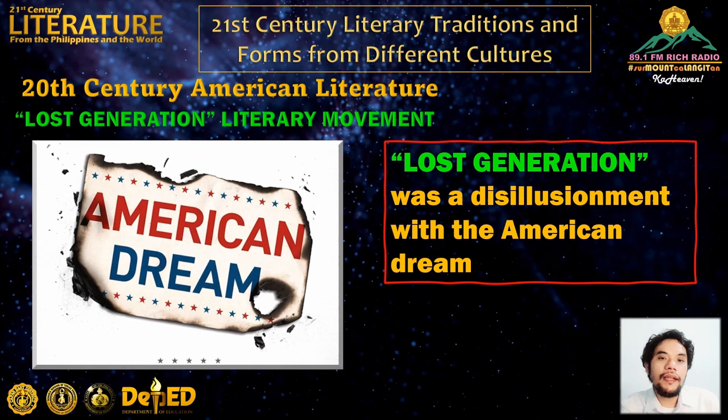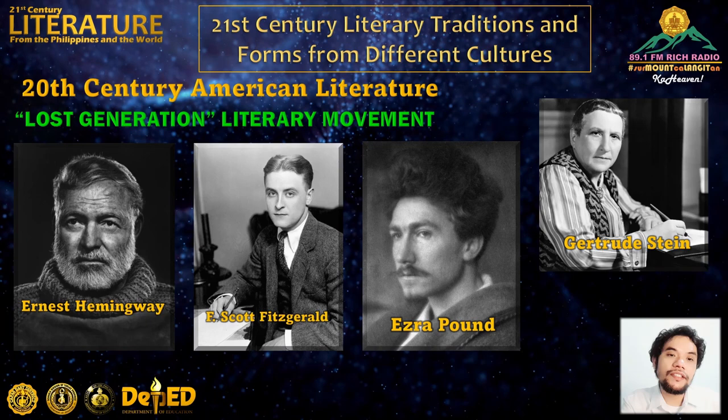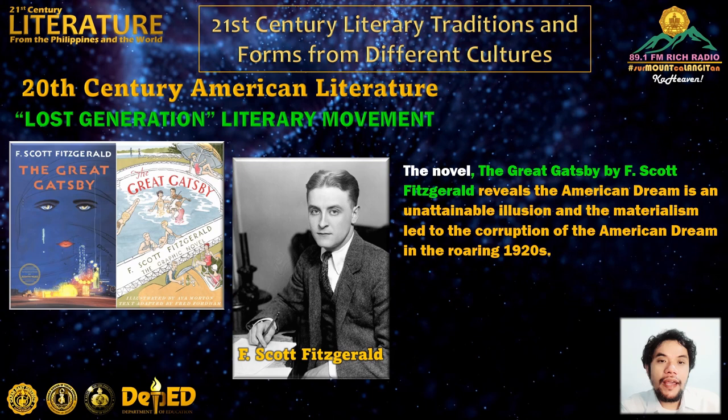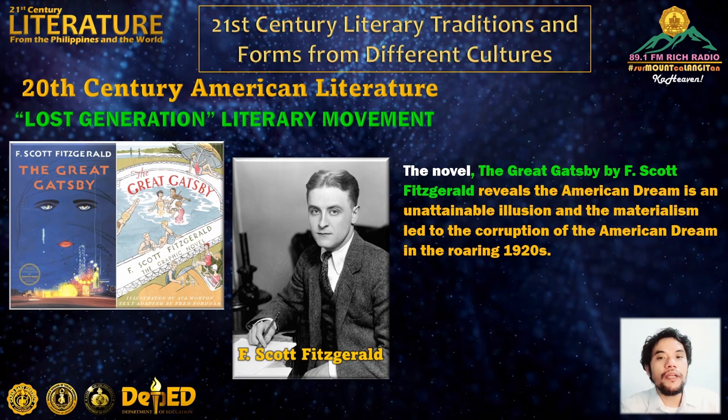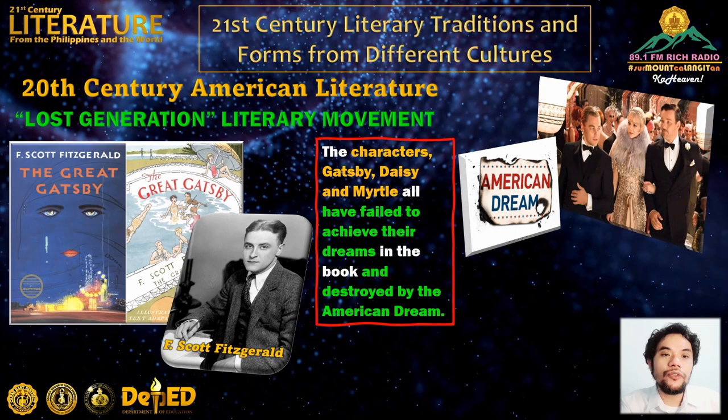Another American literary movement of the 20th century occurring around World War II was the Lost Generation. Disillusionment with the American dream characterized the work of Ernest Hemingway and other writers such as F. Scott Fitzgerald, Ezra Pound, and Gertrude Stein. F. Scott Fitzgerald's novel The Great Gatsby reveals the American dream as an unattainable illusion, and that materialism led to the corruption of the American dream in the roaring 20s. The characters Gatsby, Daisy, and Myrtle all failed to achieve their dreams and were destroyed by the American dream.